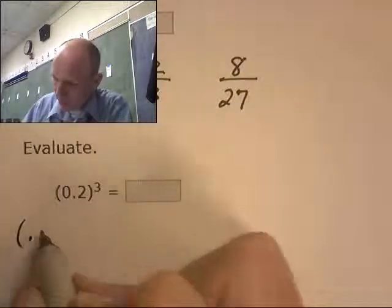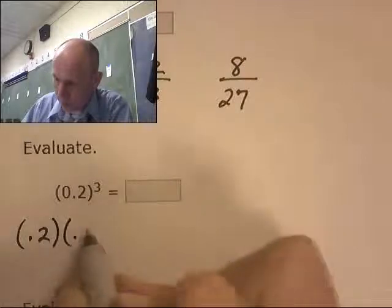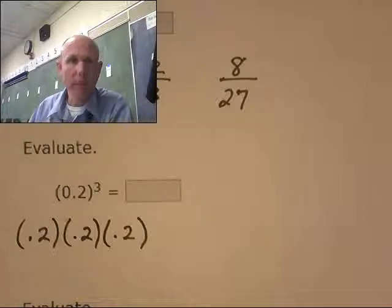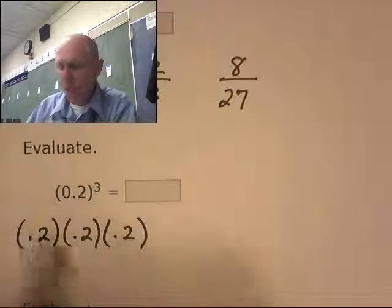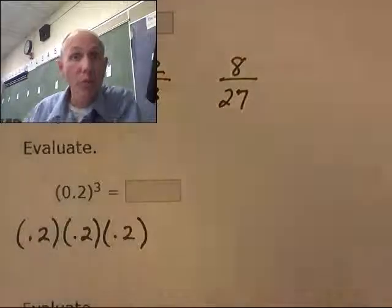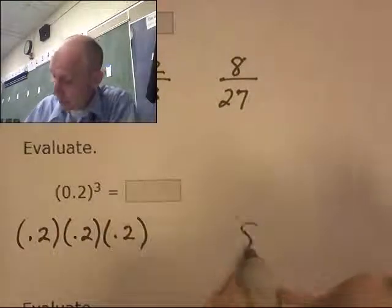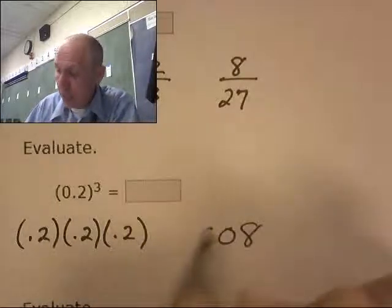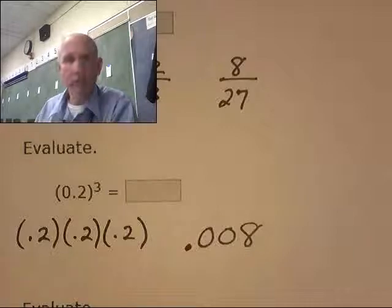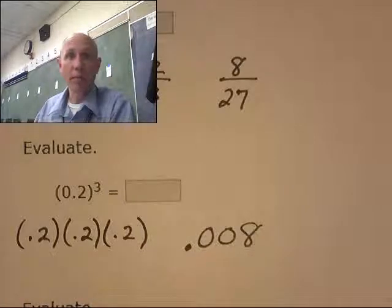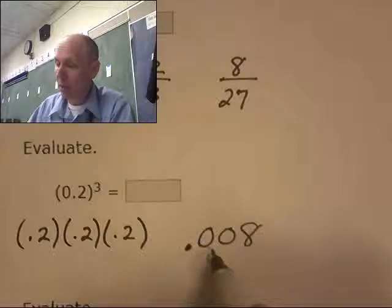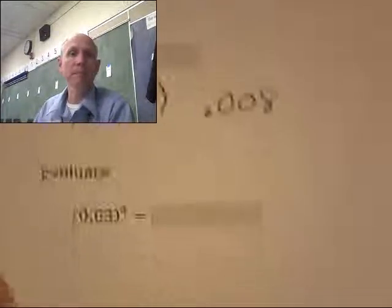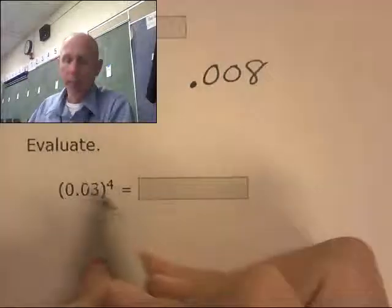What is this? This is 0.2 times 0.2 times 0.2. Isn't this just, ignore the decimals, 2 times 2 times 2. That's 8. But how many decimal places? One, two with three decimal places. There you go, 8 with three decimal places, 0.008. One, two, three decimal places.